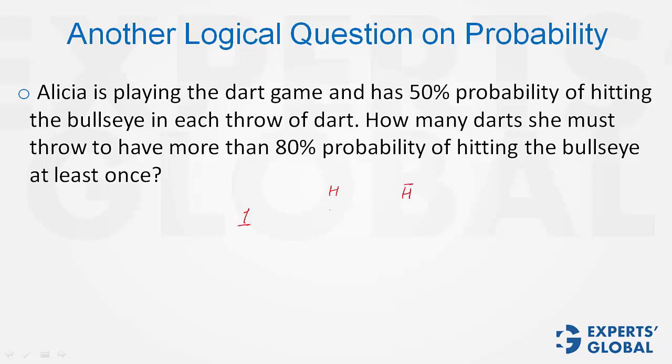In one attempt, the probability of hitting is half, 50%. Of not hitting is also half, 1 minus half, which is half.